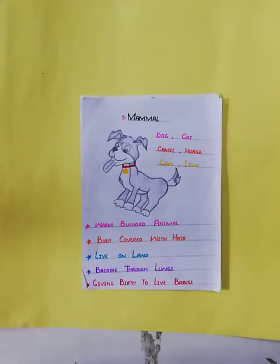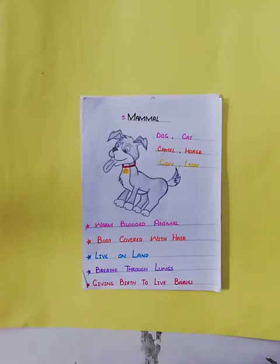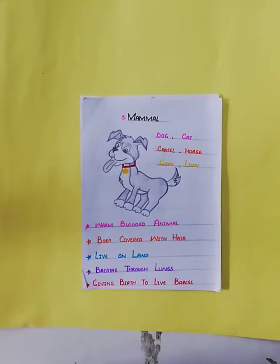Mammals are also warm-blooded animals. Their body is covered with hairs. If we observe the body of cats, dogs, cows, and buffaloes, their body is covered with hairs. They mostly live on land and they breathe through their lungs.